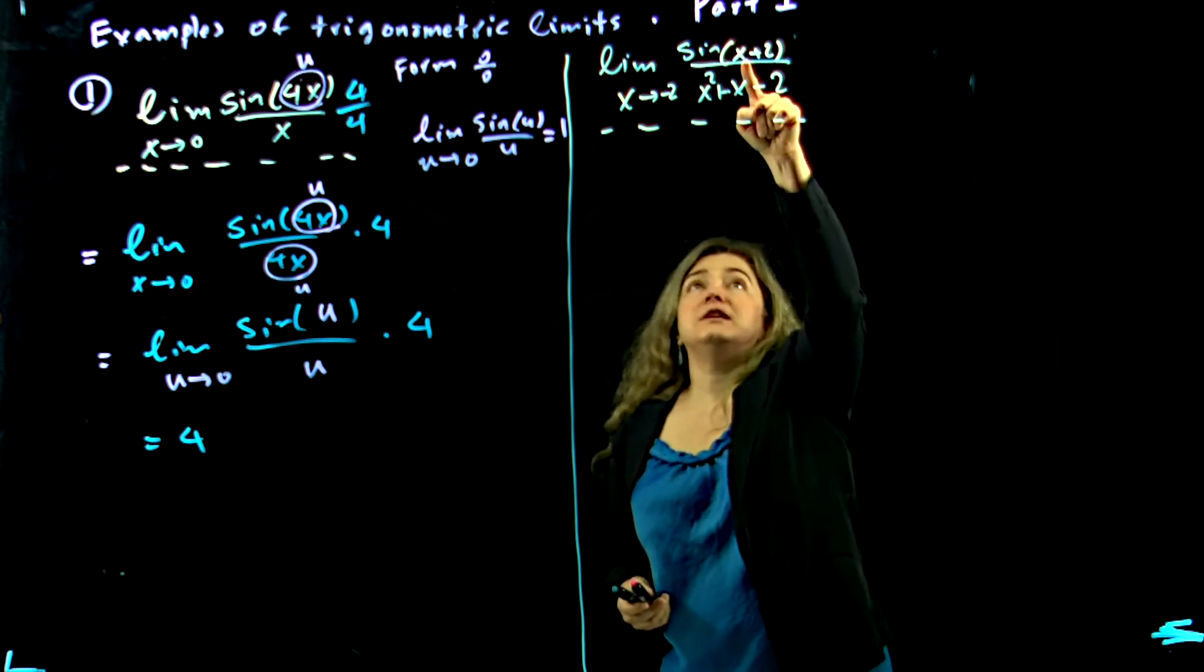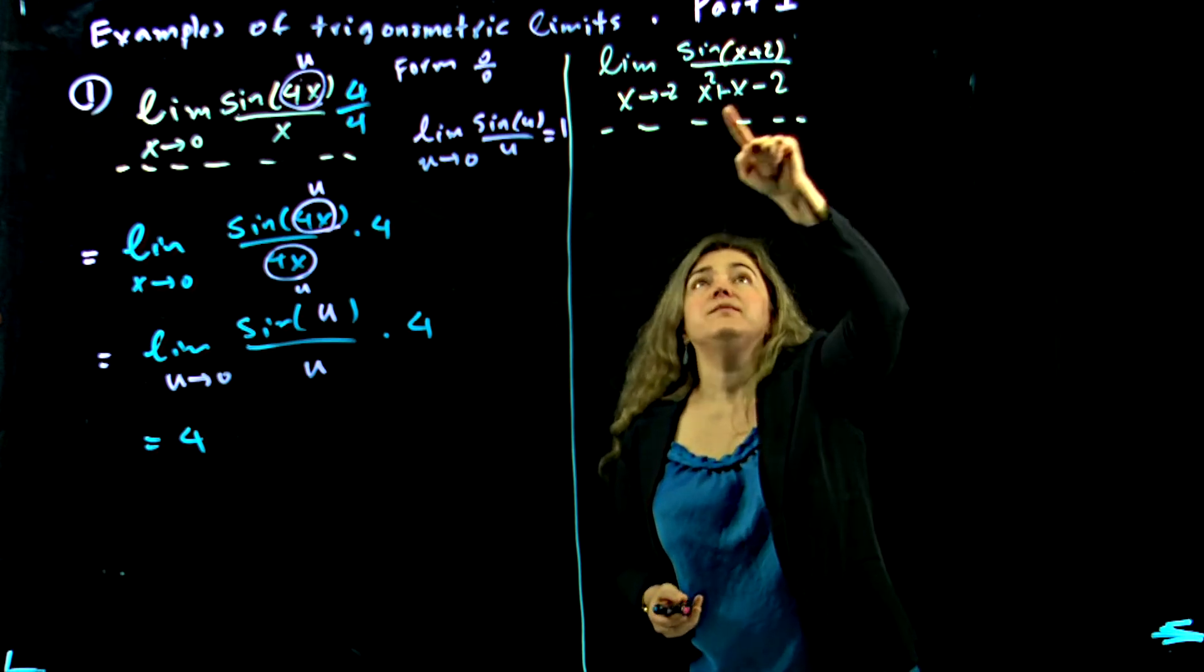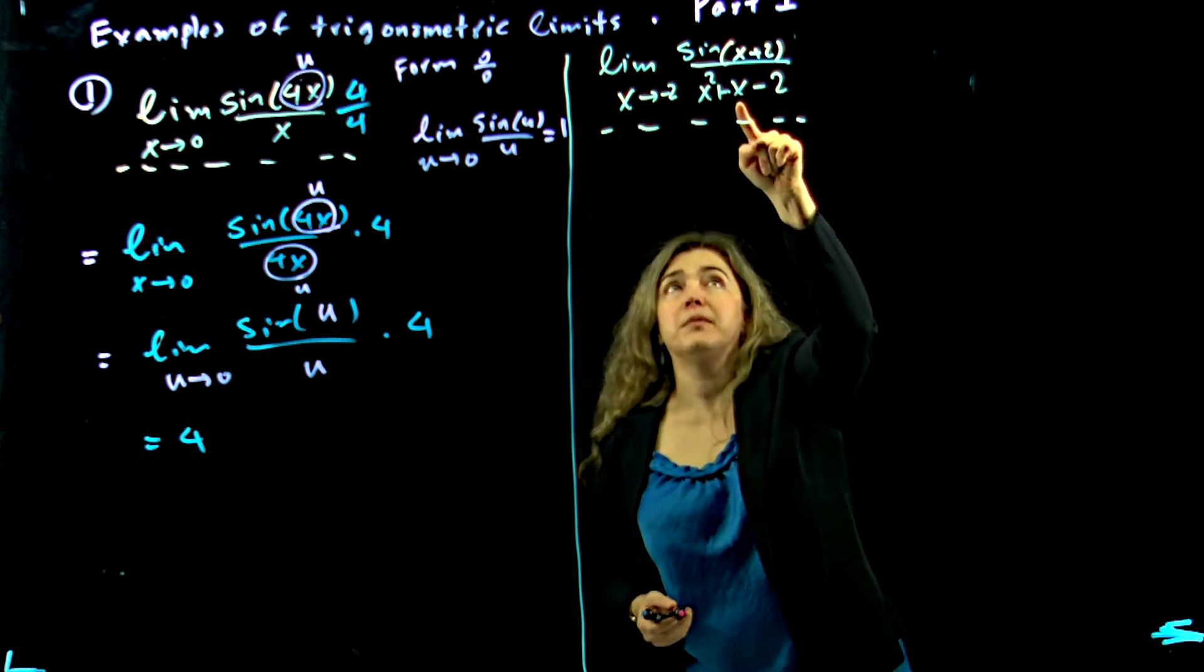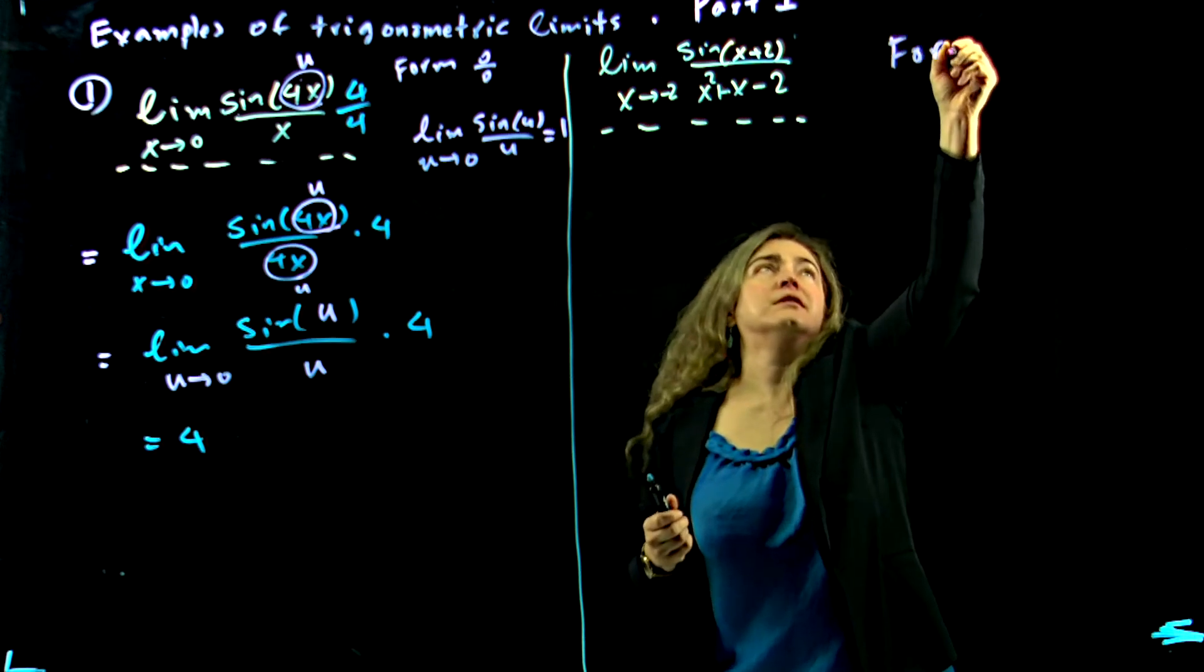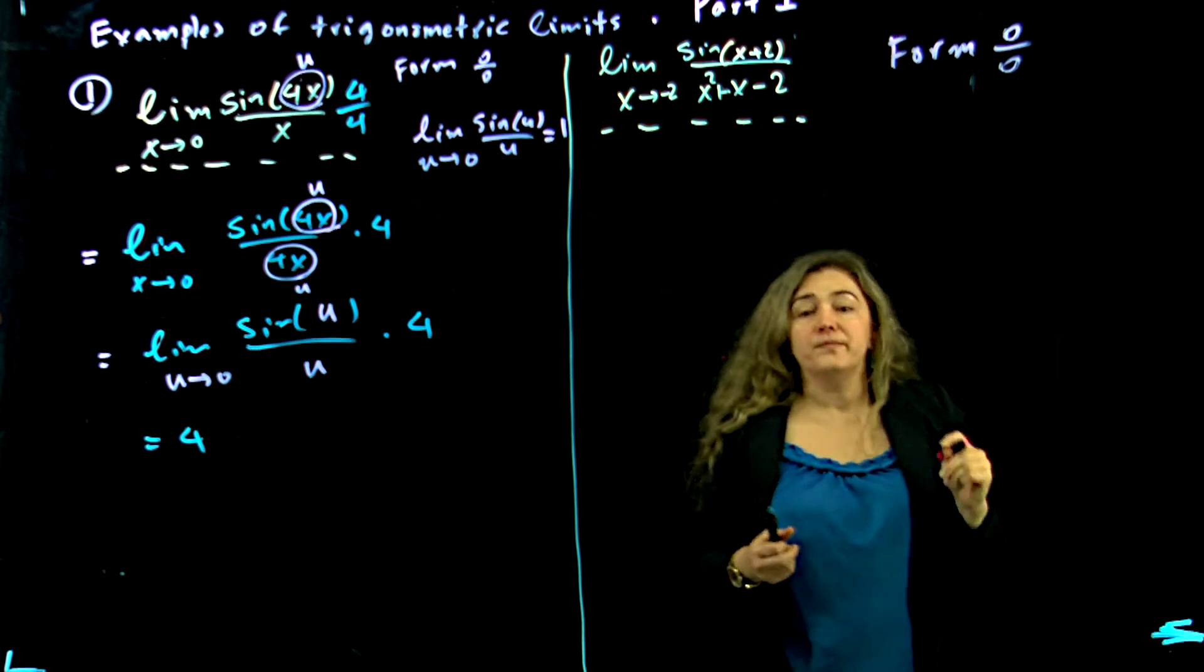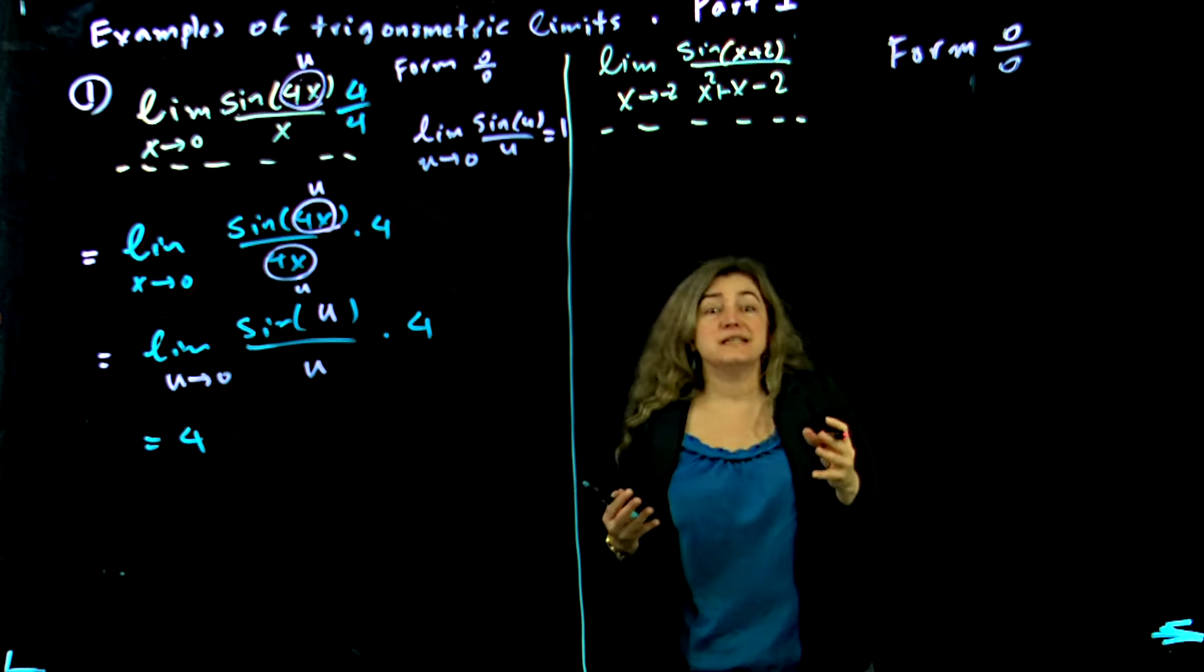If I plug in negative 2 here, I get sine of 0 which is 0. If I plug in negative 2 in the bottom, I get 4 minus 2 minus 2 which is 0. So I have the form 0 over 0. Now what's the next step to do?